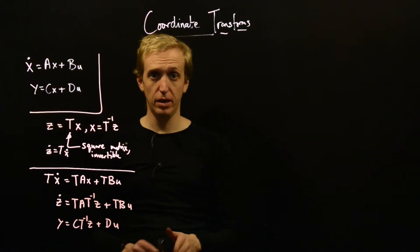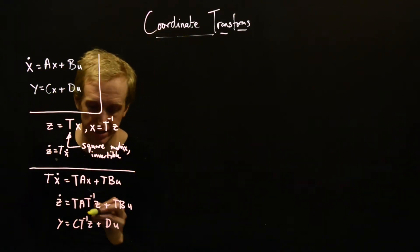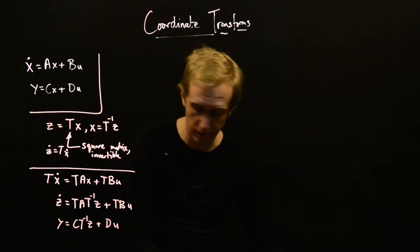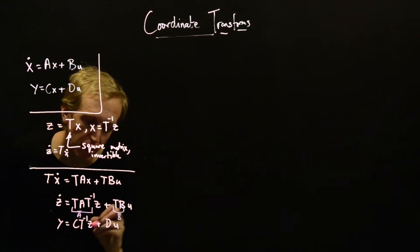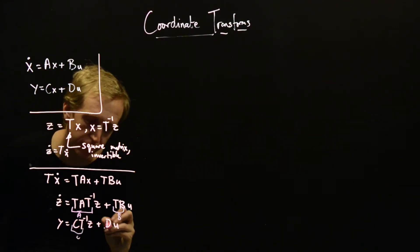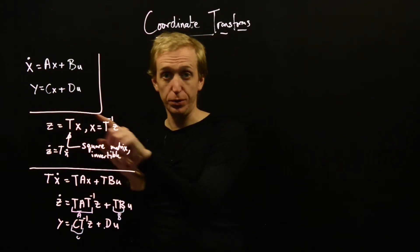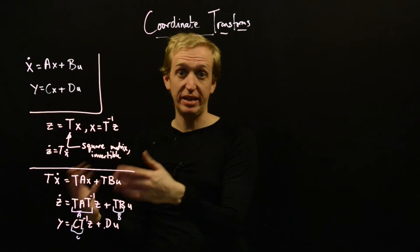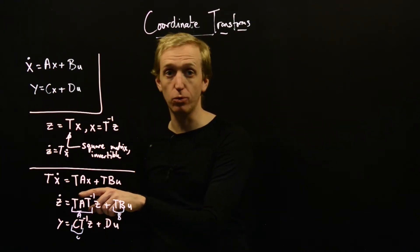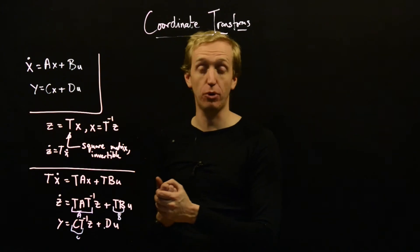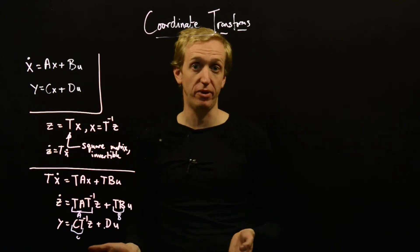We've ended up with another model in state-space form, but just with modified A, B, C and D matrices. So we have A-bar equals T A T-inverse, B-bar equals T B, C-bar equals C T-inverse, and the D matrix is left unchanged. The result of applying our coordinate transformation is another state-space model where A, B and C matrices have all been modified by whatever matrix T we choose.